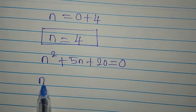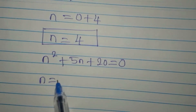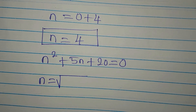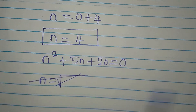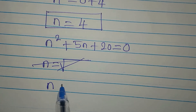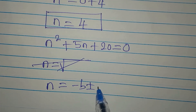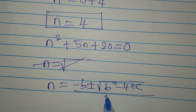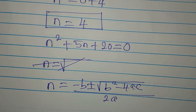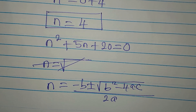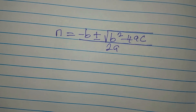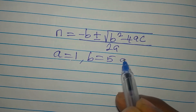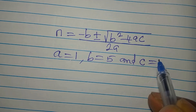The quadratic formula is: n = (minus b ± √(b² minus 4ac)) / (2a). From the equation n² + 5n + 20 = 0, our values are a = 1, b = 5, and c = 20.